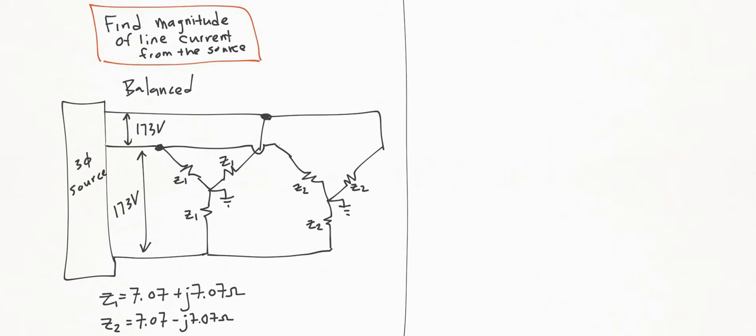Only this time, we added another parallel Y load to it. The parallel load that we're adding has an impedance that's conjugate to the original load. The problem is asking us to find the magnitude of the line current from the source.